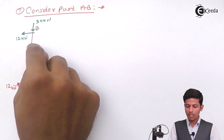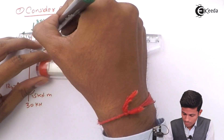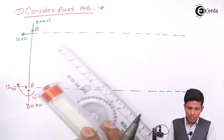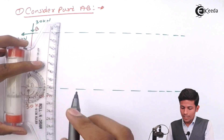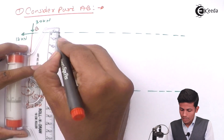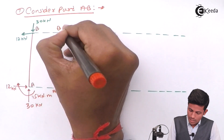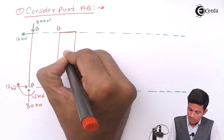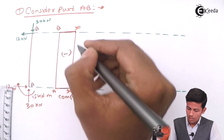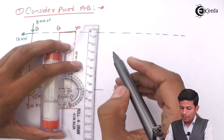Now draw the AFD for member AB. The axial force is compressive, so it is negative (compression is negative convention). The AFD for AB shows compression of 30 kN — drawn on the inside of the frame as negative.